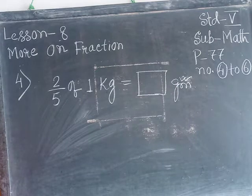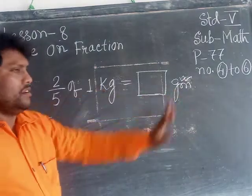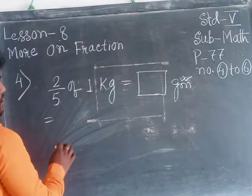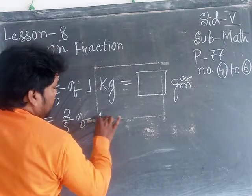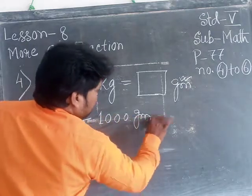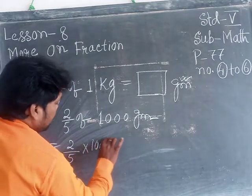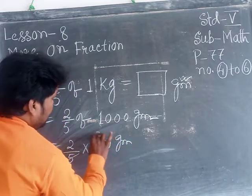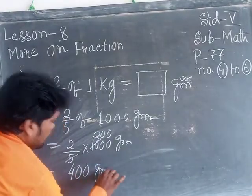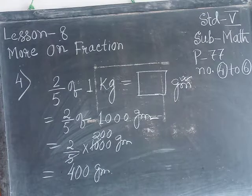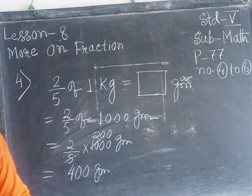So at first you will change the kilogram into gram unit. One kilogram equals one thousand grams. Now two-fifths of one kilogram, that means one thousand grams. Of means multiplication. Two-fifths multiplication one thousand grams equals 400 grams. So you will have to calculate: at first kilogram unit into gram unit, then calculate as previous calculation.